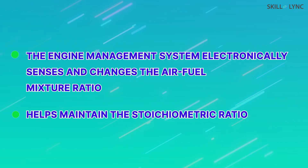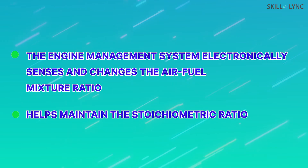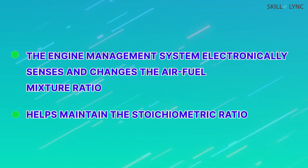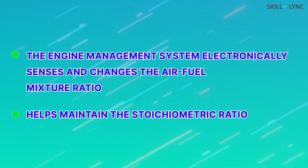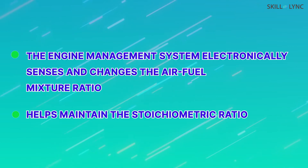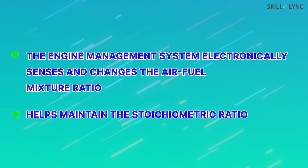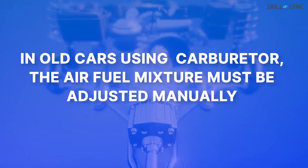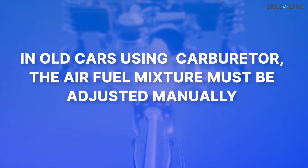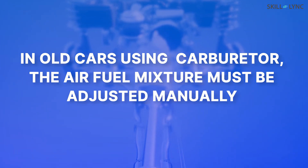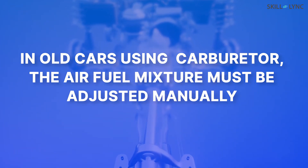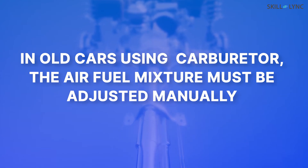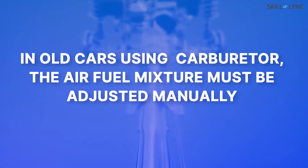In modern cars, the engine management system electronically senses and changes the air-fuel mixture ratio to maintain the stoichiometric ratio when ethanol fuel is used, whereas in old cars, since they use a carburetor and are not equipped with an engine management system, the air-fuel mixture must be adjusted manually.